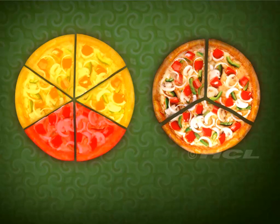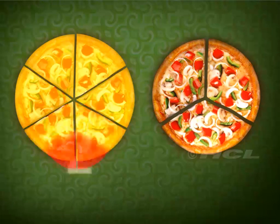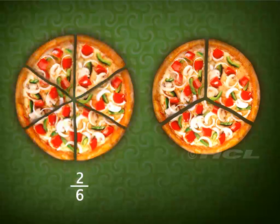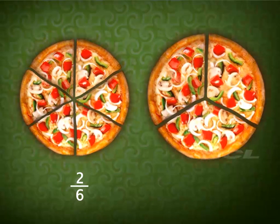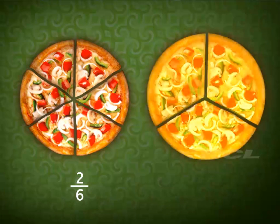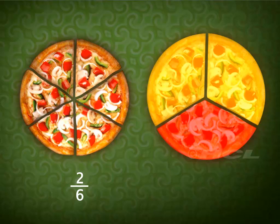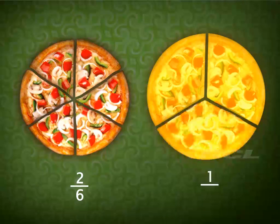So the fraction of the pizza that Sam wants to eat is two out of six. Now let's look at Sela's pizza. Out of the three portions, Sela wants to eat only one. So the fraction of the pizza Sela wants to eat is one out of three.